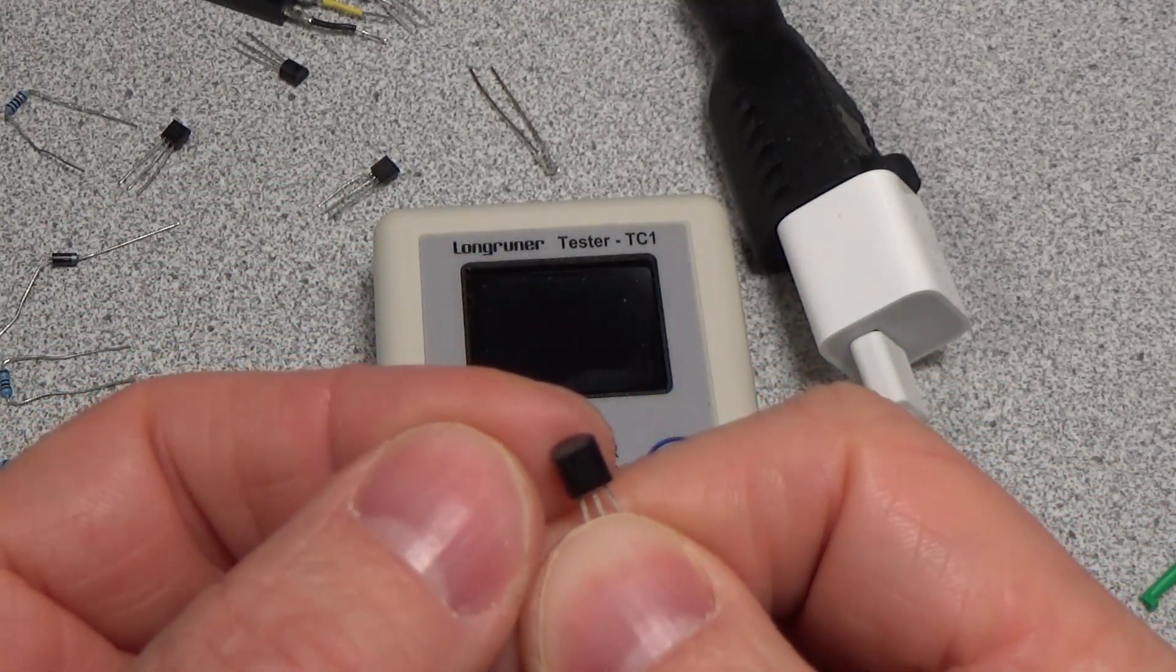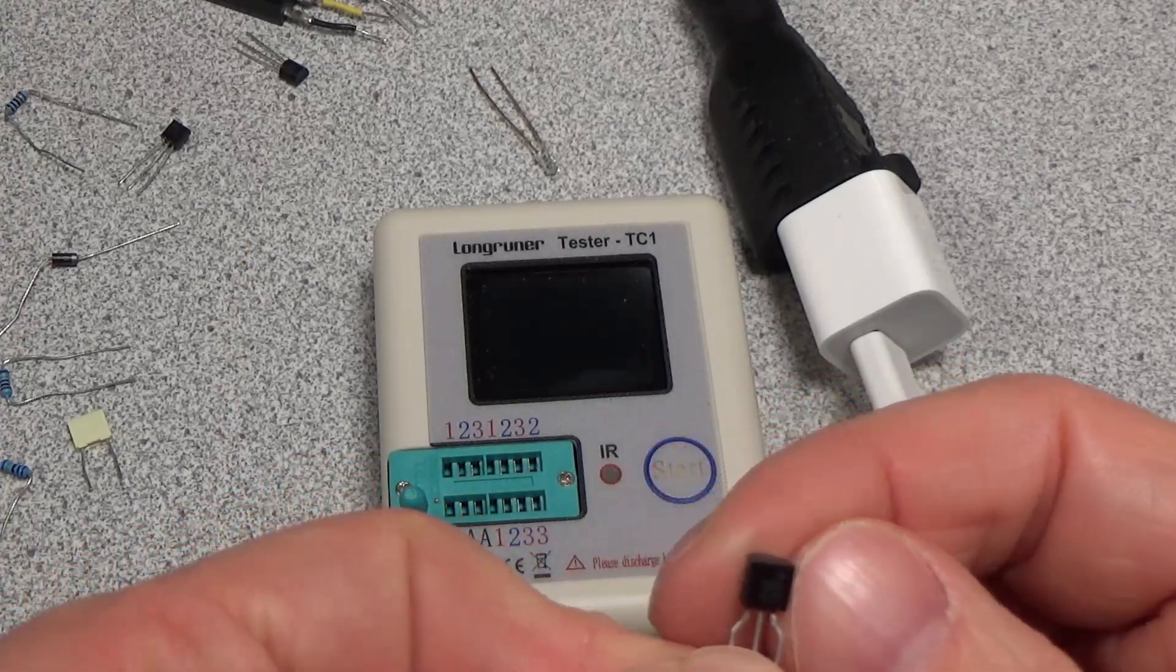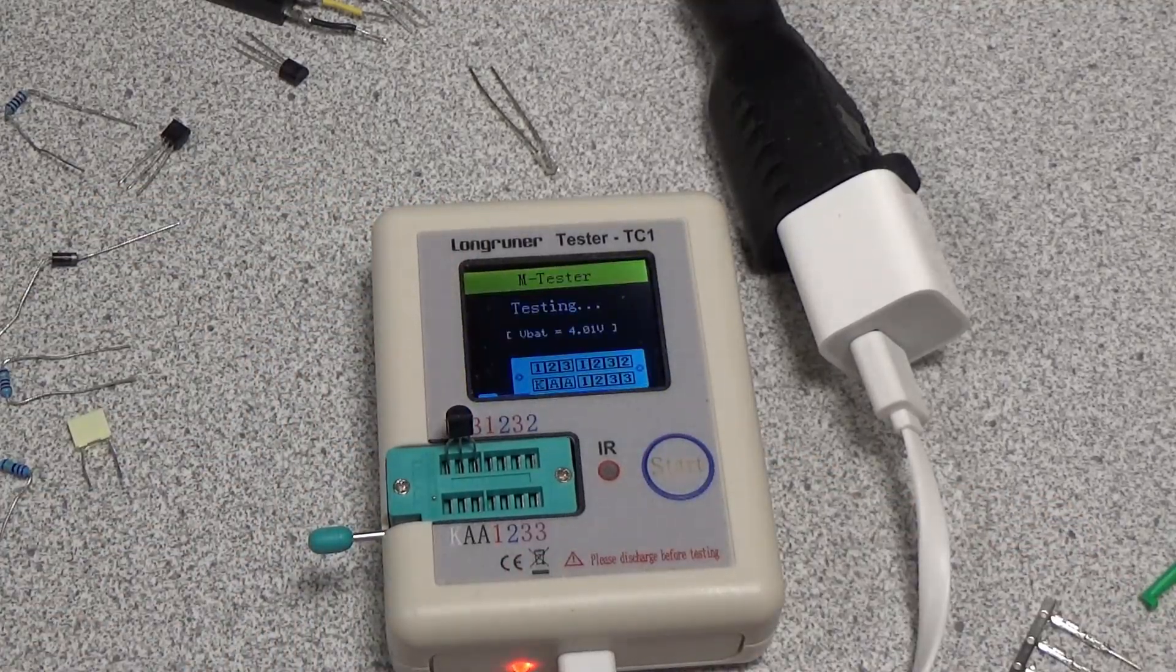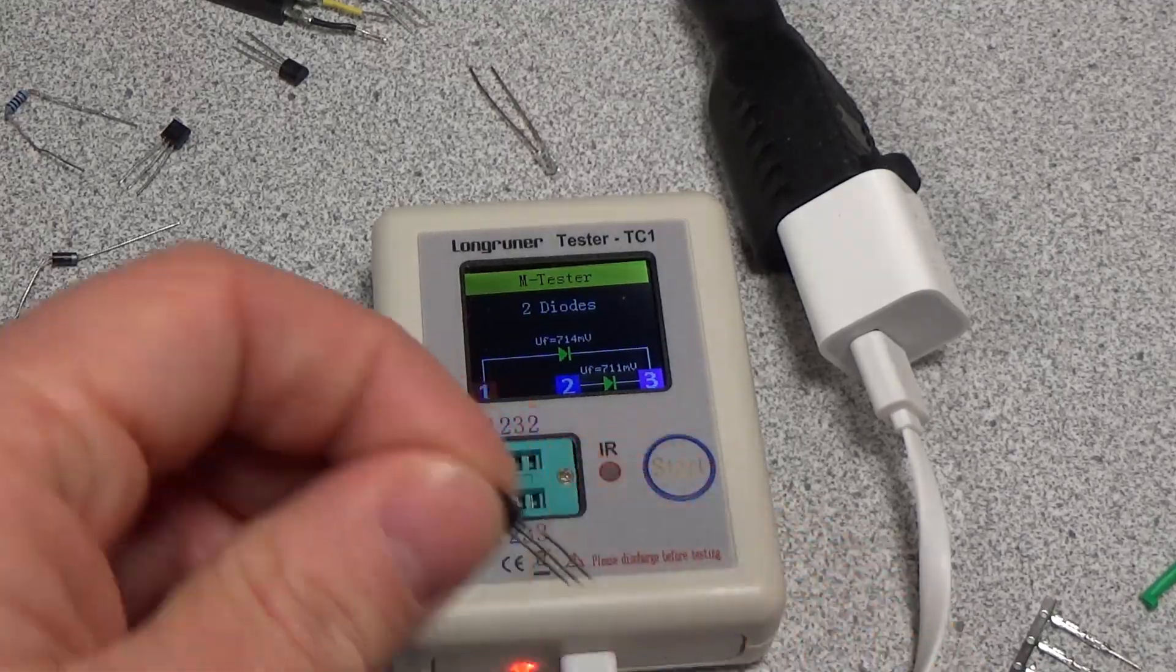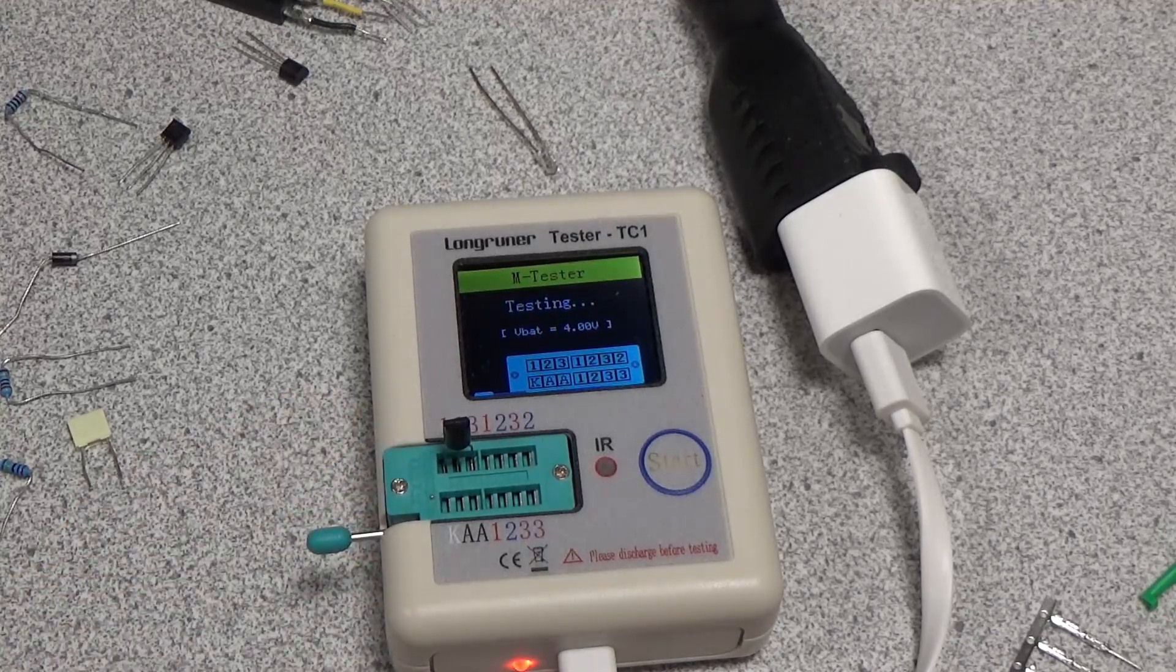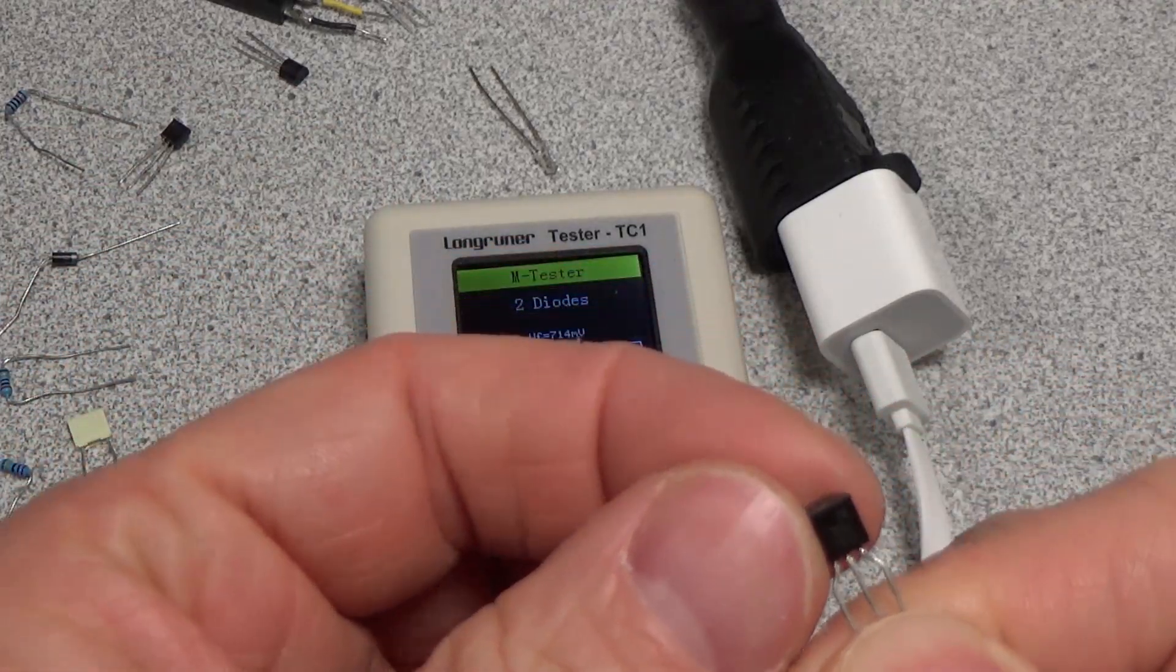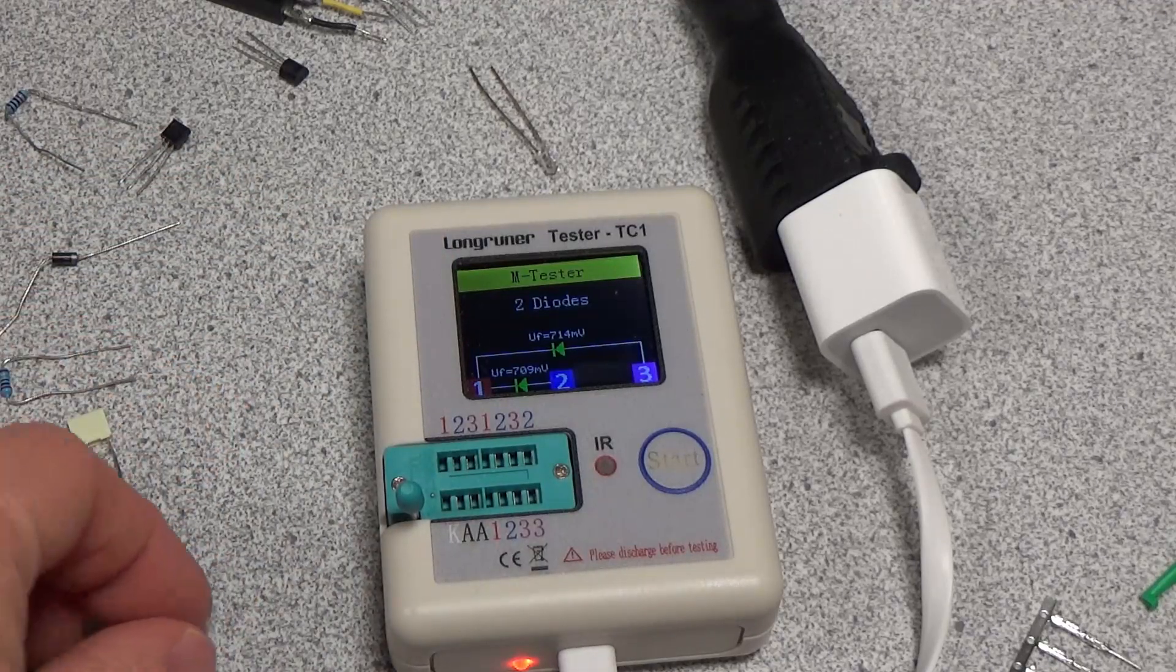All right, we got a 2N3904. This should just be a regular transistor. See what I get with this one. Two diodes. Don't like that one. Let's try that again. I just flip the component around, see if it comes up something different. Two diodes. So it is failing on a conventional BJT transistor for some reason here.